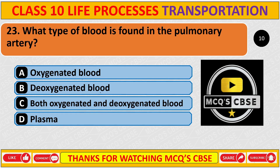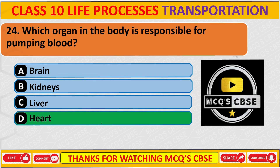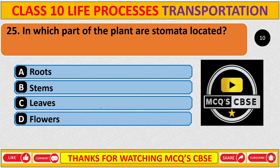What type of blood is found in the pulmonary artery? The correct answer is B: deoxygenated blood. Which organ in the body is responsible for pumping blood? The correct answer is D: heart. The last question of this series: in which part of the plant are stomata located? The correct answer is C: leaves. Thanks for watching MCQCBSE. Please like and subscribe to our channel to get regular updates. Thank you.